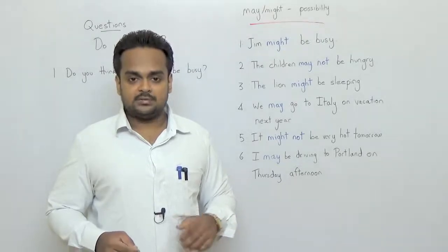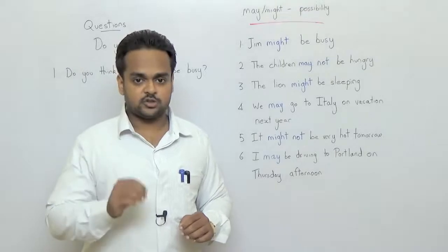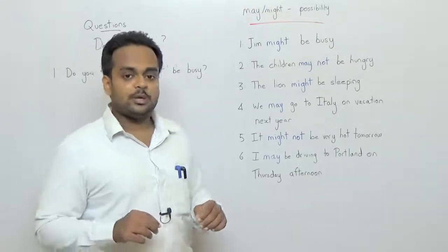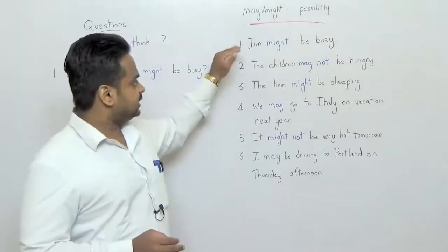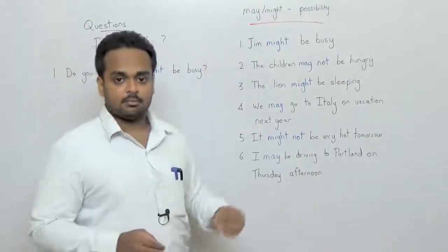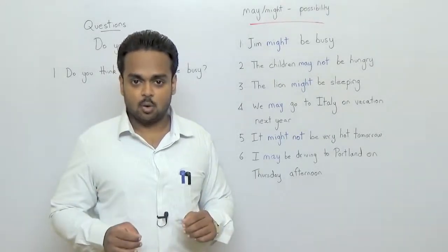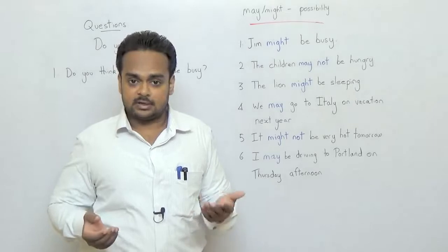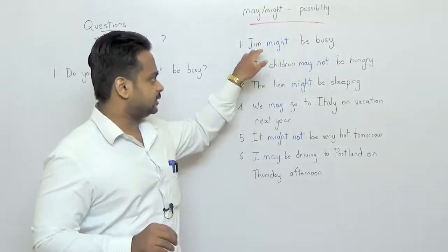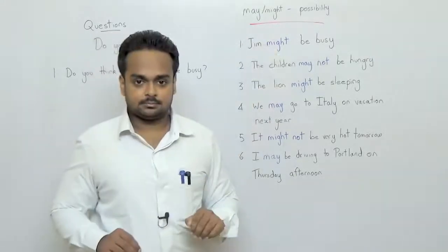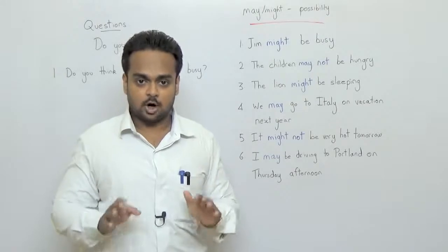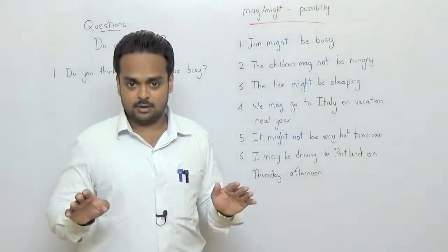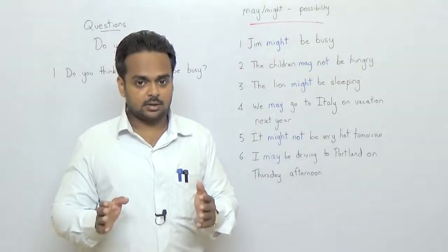Alright now we've talked about positive and negative sentences with may and might. But how do you make questions? Well there are two ways to make questions. The first way is to do what we normally do in the present tense. Now if this was a present tense sentence, Jim is busy, that's a present tense sentence. We would change the position of the subject and verb. We would say is Jim busy? And that is the question. You can do the same thing with this sentence. You can say might Jim be busy? And that is possible. That is grammatically correct. But that's not very common. So you can just leave out that method. I wanted to share it with you because it's grammatically correct but it's old English. We don't do that anymore.